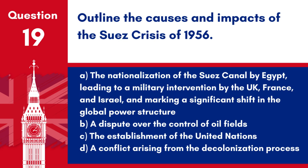Question 19: Outline the causes and impacts of the Suez Crisis of 1956. a. The nationalization of the Suez Canal by Egypt, leading to a military intervention by the UK, France and Israel, and marking a significant shift in the global power structure. b. A dispute over the control of oil fields. c. The establishment of the United Nations. d. A conflict arising from the decolonization process. Answer: a. The Suez Crisis highlighted the declining power of the British Empire and the rise of new global powers.